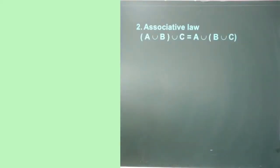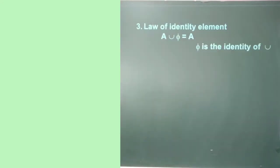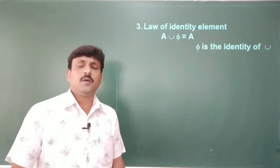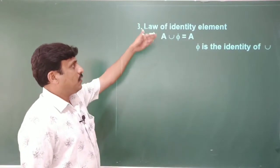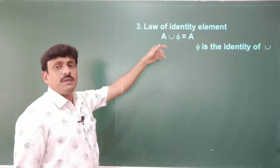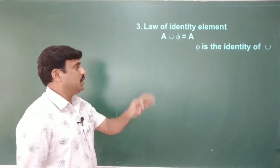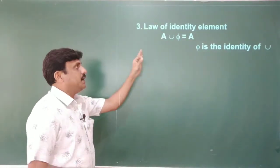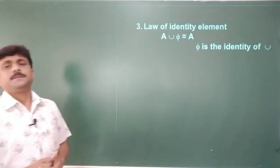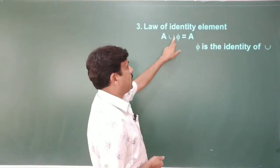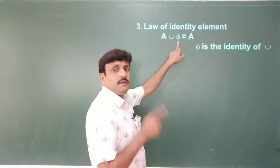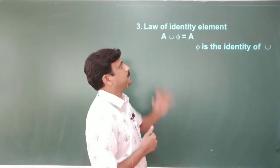Similarly we can prove the second law, that is the associative law. Next, take the third law — the law of identity, also called the identity law. The property is: A ∪ ∅ = A, where ∅ (empty set) is the identity of union.